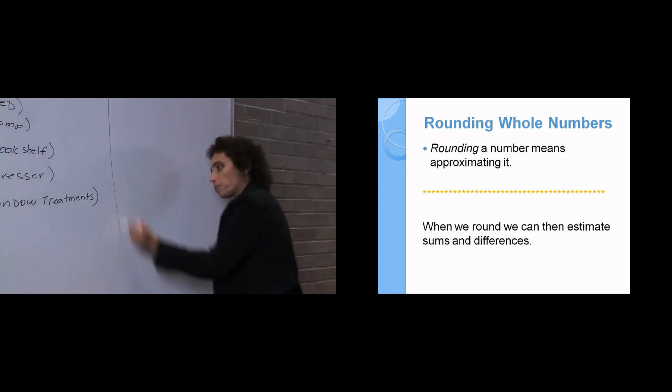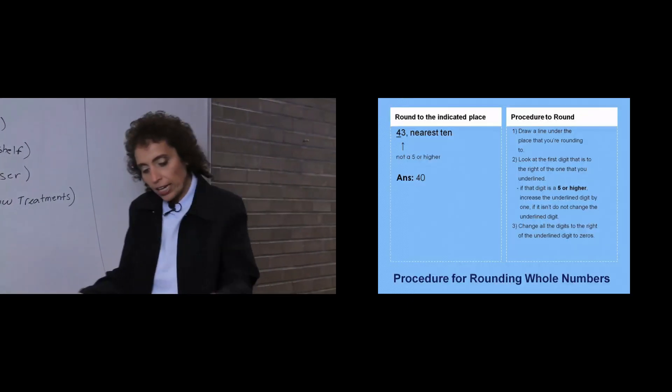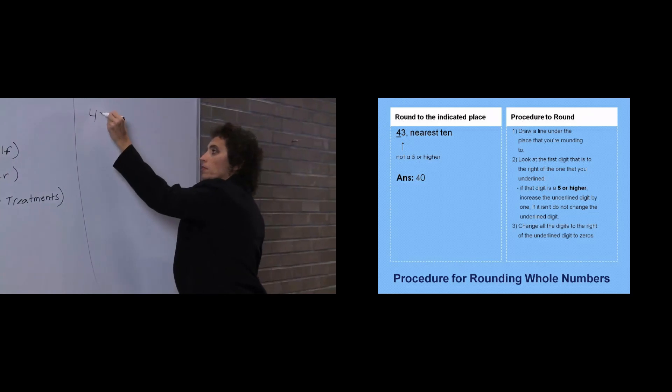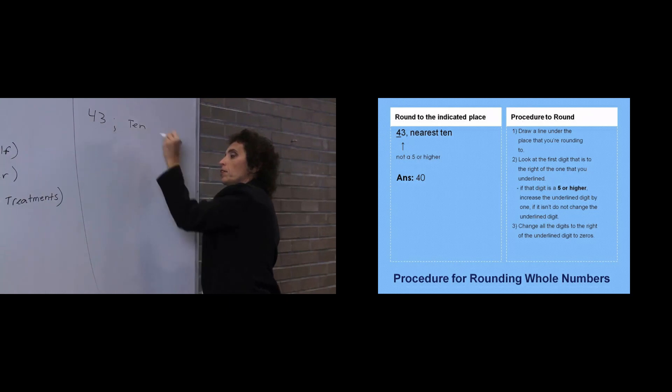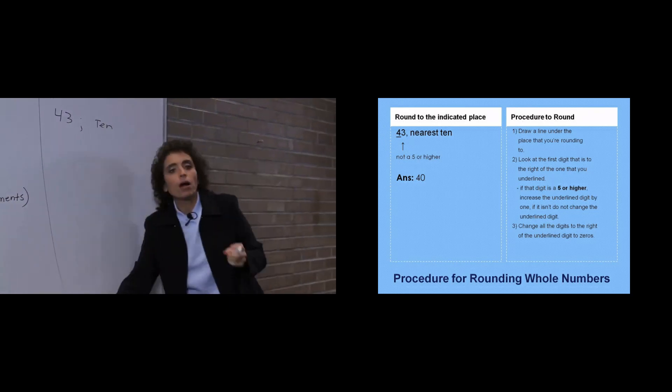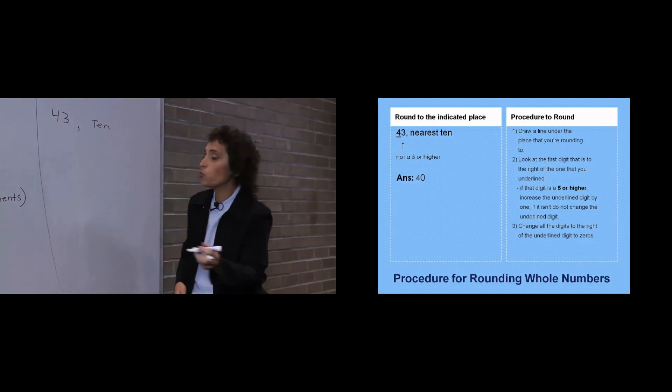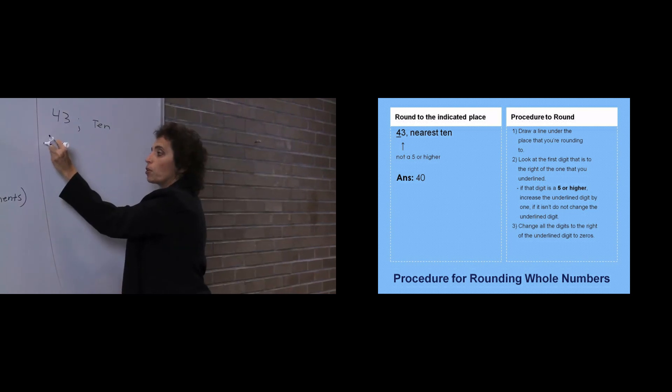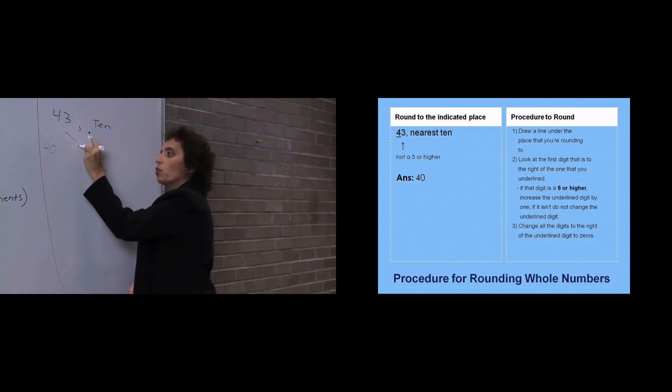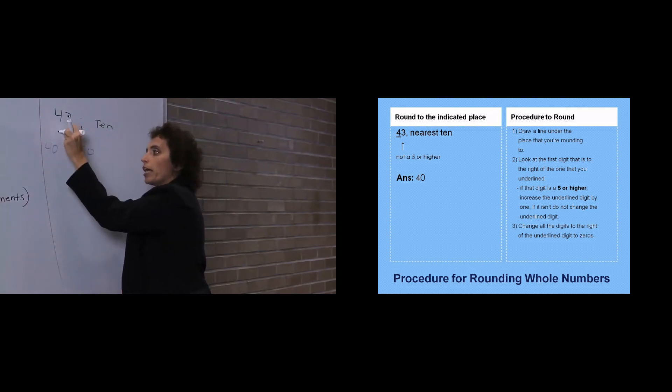Let's take the number 43 and round that to the nearest 10. What we're really asking by rounding to the nearest 10 is: is your number closer to 40 or is it closer to 50? That's what we're really asking you.